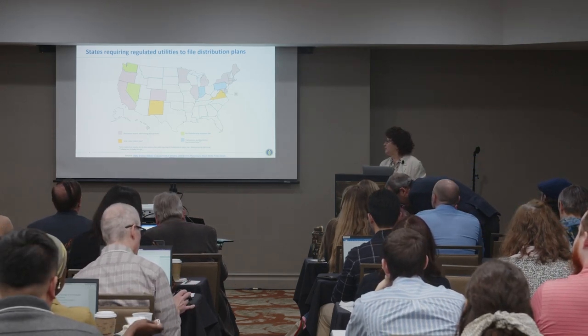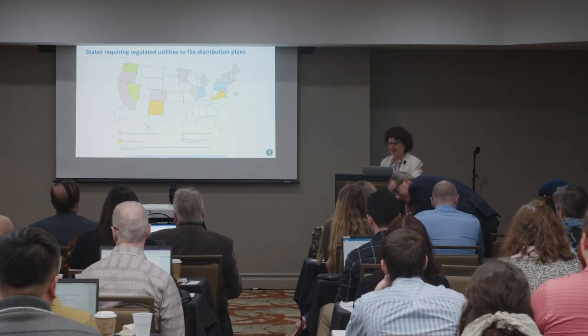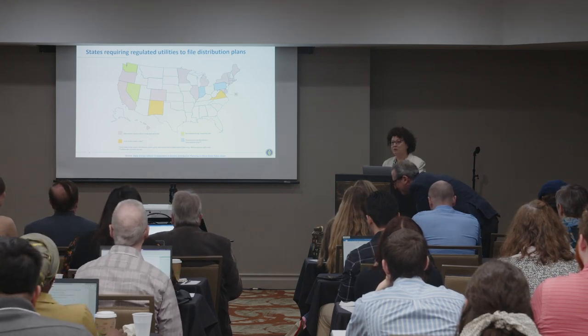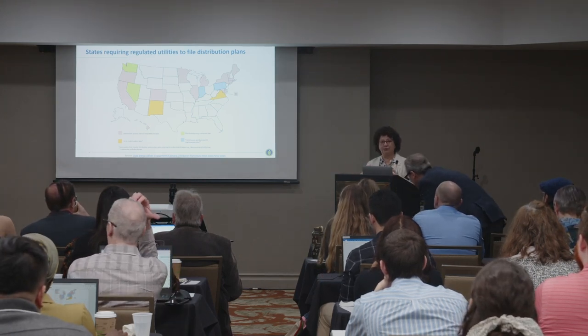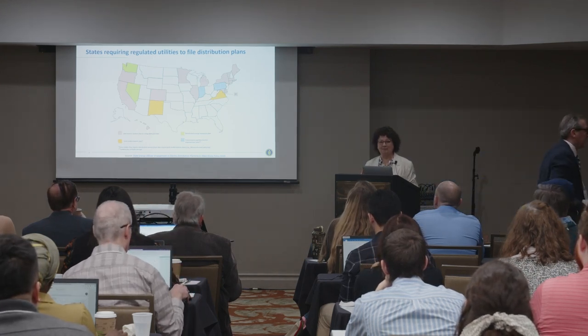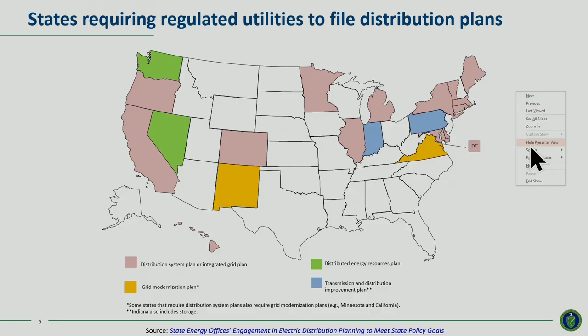This map is from a paper by Berkeley Lab and Nazio on ways that state energy offices are engaging in distribution planning. You may think of it as utilities, their regulators, and stakeholders, but state energy offices do a lot — even if they're not directly participating in regulatory proceedings. They may facilitate workgroups or participate in them, and they prepare a host of plans: comprehensive energy plans, state energy security plans, climate change plans, and more. This terminology about what is distribution planning varies by state, but distribution plans generally fall into four categories.